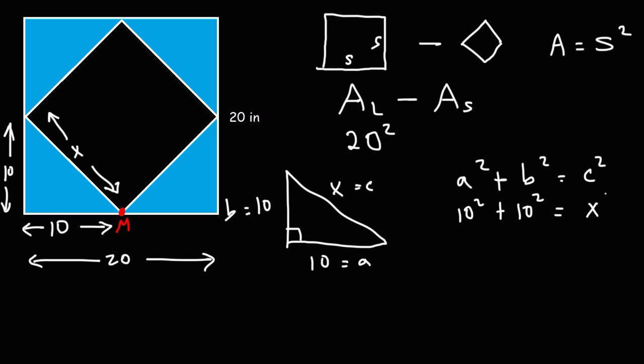A and b are both equal to 10, and we can replace c with X. 10 squared or 10 times 10 is 100, so we have 100 plus 100 which equals X squared. 100 plus 100 is 200, so 200 equals X squared.